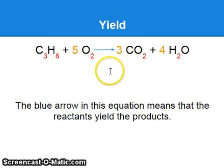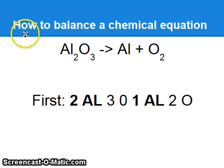The arrow right here means yield. This means that the reactants yield the products. How to balance a chemical equation.